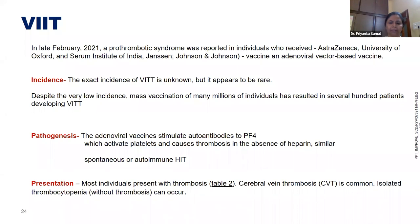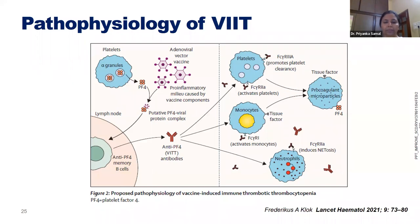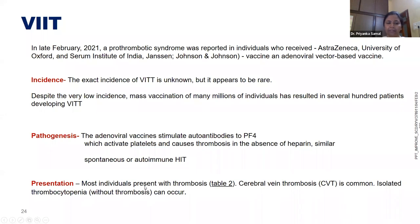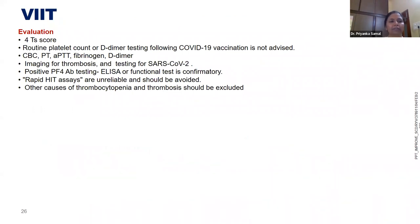The pathogenesis of VITT: the adenoviral vector vaccine causes a pro-inflammatory milieu. Platelet factor 4 is released from platelets, forming a complex that enters lymph nodes. Memory B cells produce antibodies that attack platelets via Fc gamma receptors on monocytes, leading to phagocytosis. Thrombosis is triggered by recruiting neutrophils and pro-coagulant particles with tissue factor exposure. The pathophysiology is similar to HIT. We have seen cases — typically females with cerebral vein thrombosis and isolated thrombocytopenia post-vaccination.